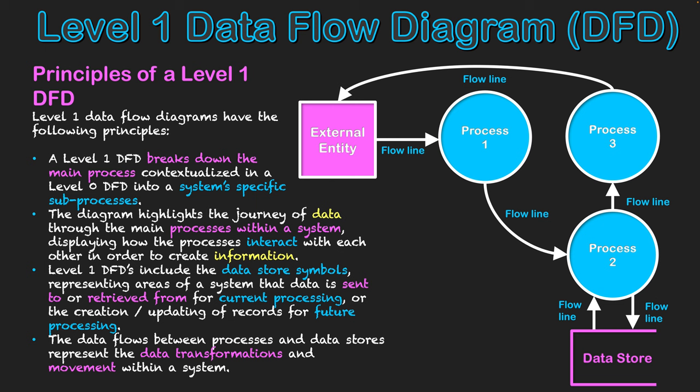I hope this video has given you an understanding of a level one data flow diagram. We've taken the system from the level zero diagram and broken it up into its sub-processes, requiring multiple circles. New to this type of diagram is the data store symbol — a place where data is saved to and retrieved from at a later date. All processes can be linked to each other by arrows, but external entities and data stores can't link directly to each other; they must go through processes, which are written with verb-based labels showing what they do to data.